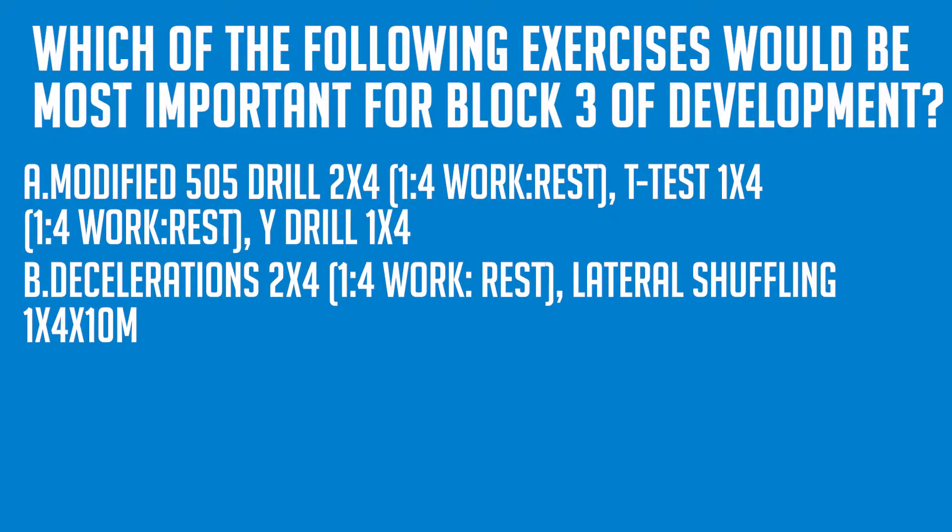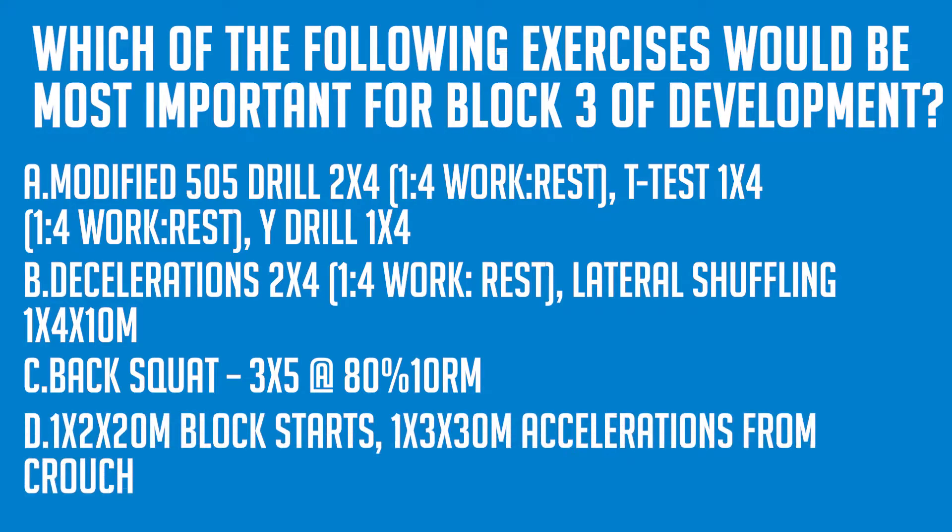We have A: modified 505 drill with a 1 to 4 work to rest ratio, a T-test with a 1 to 4 work to rest ratio, and a Y drill. B: Decelerations, 2 sets of 4 with a 1 to 4 work to rest ratio, and lateral shuffling, 1 set of 4 at 10 meters. C: Back squat, 3 sets of 5 at 80% of their 10 rep max. Or D: 1 set of 2 20 meter block starts, 1 set of 3 30 meter accelerations from crouch.